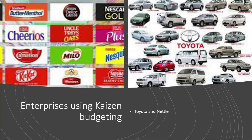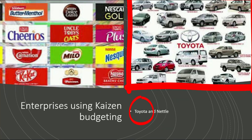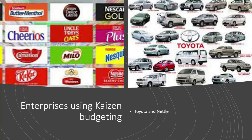Examples of enterprises using Kaizen budgeting are Nestlé and Toyota. There are variations of these budgeting methods, and some are also unique to enterprises. For example, an enterprise could start with profit and work backwards to come up with a budgeting plan with the intention of achieving targeted profits.